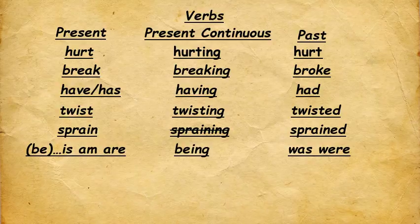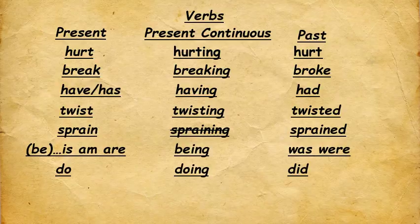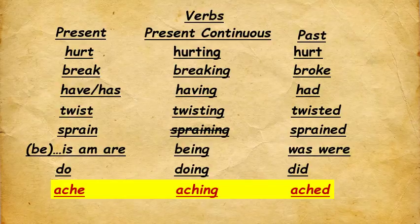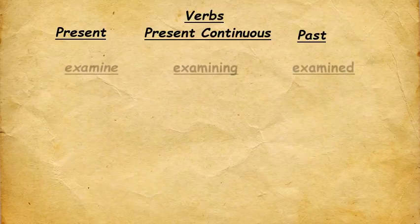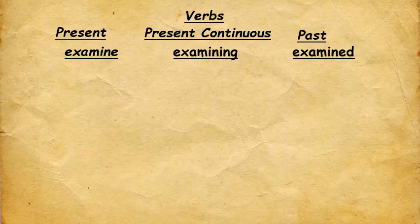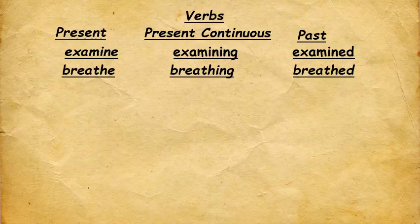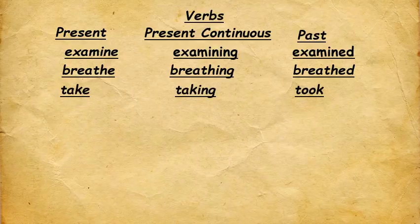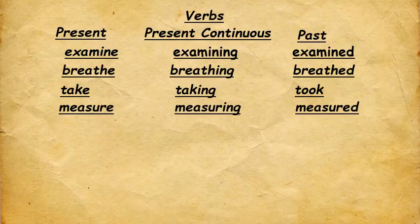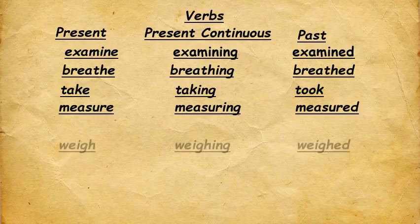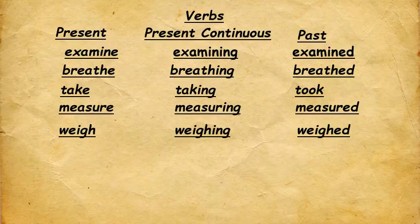The verbs used in this lesson: hurt, hurting, hurt; break, breaking, broke; have/has, having, had; twist, twisting, twisted; sprain — not used in present continuous — past: sprained; be: is, am, are, being, was, were; do, doing, did. The verb ache is not very common, but it is a verb: ache, aching, ached. Examine, examining, examined. Breathe, breathing, breathed. Take, taking, took. Measure, measuring, measured. Weigh, weighing, weighed.